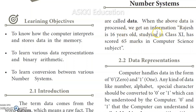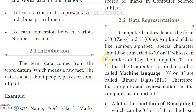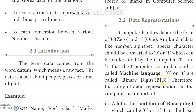Coming to data representation: we handle data by writing it in English or Tamil, but can a computer understand all languages? No — the computer doesn't understand any English, Tamil, or any other language. A computer can understand only one language, which is machine language. Machine language consists of only 0s and 1s.